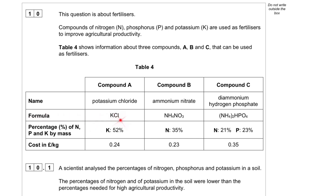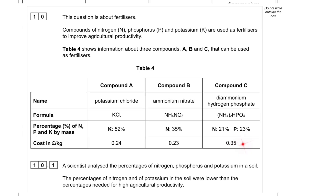The formulas are: compound A is KCl (potassium chloride) with 52% potassium; compound B is ammonium nitrate with 35% nitrogen; compound C is diammonium hydrogen phosphate with 21% nitrogen and 23% phosphorus. The cost in pounds per kilogram is 0.24 for A, 0.23 for B, and 0.35 for C.